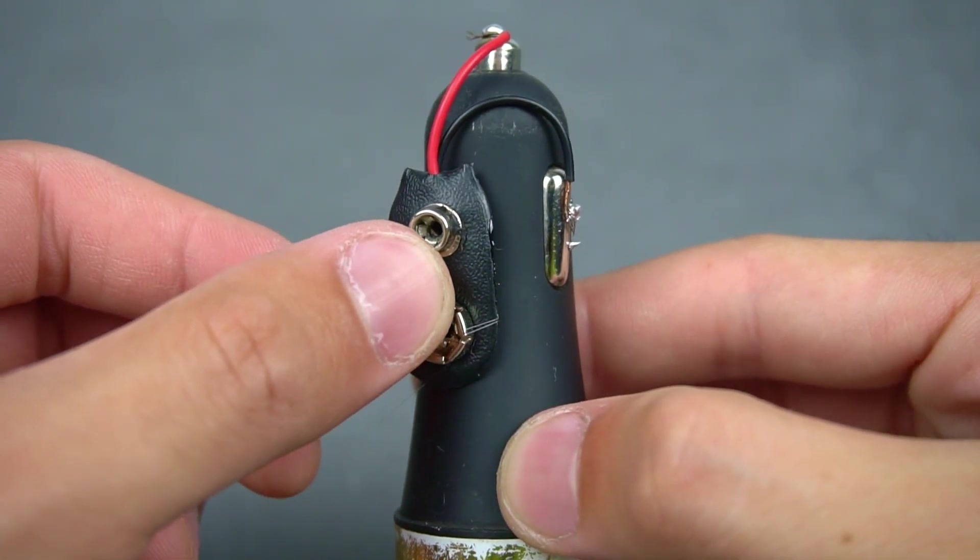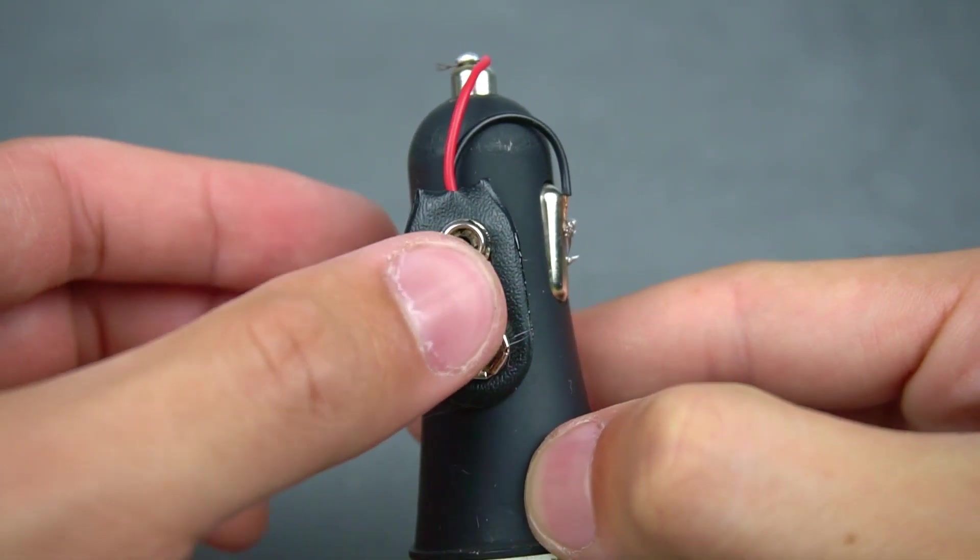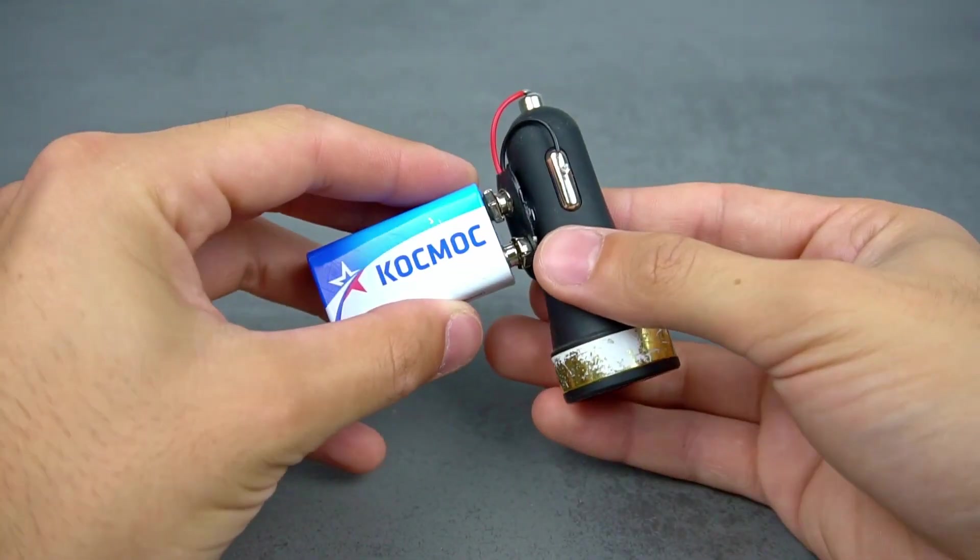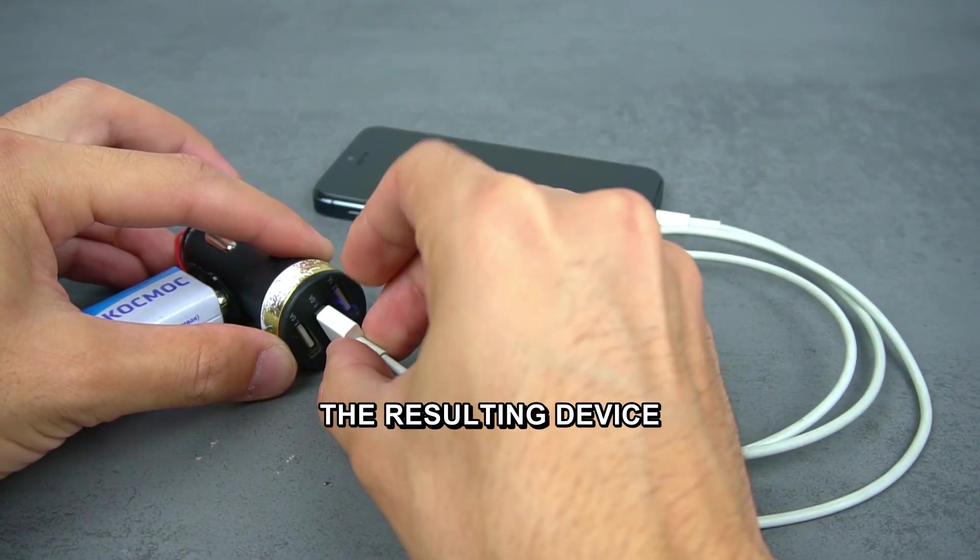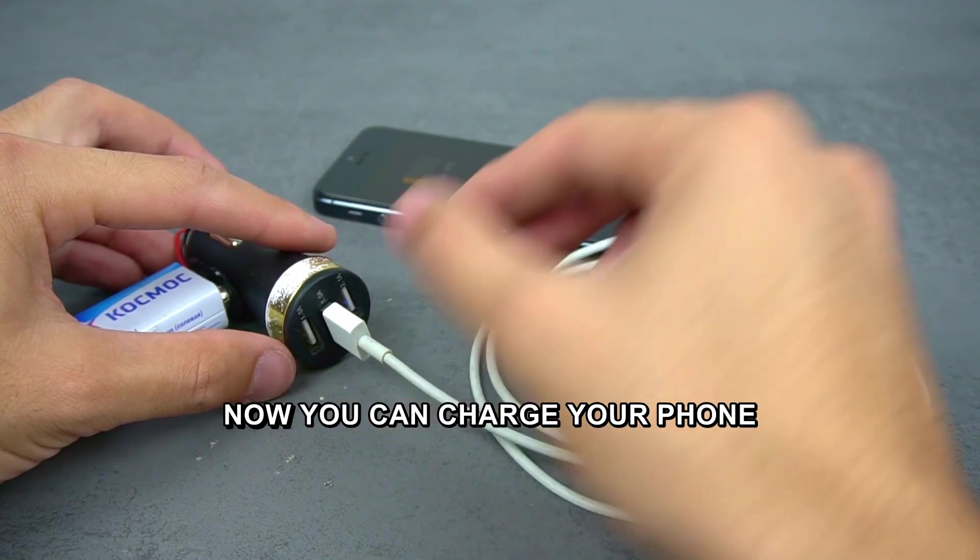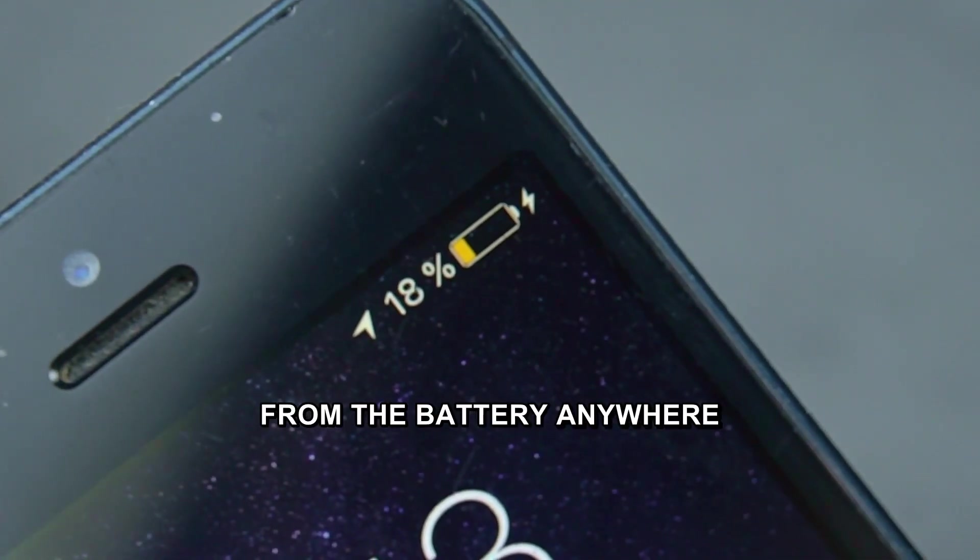Connect the battery. Connect a USB cable to the resulting device. Now you can charge your phone from the battery anywhere.